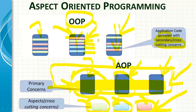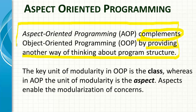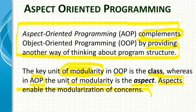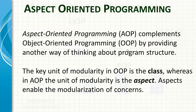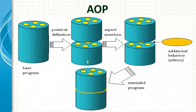AOP is not something which replaces OOP — it complements OOP by providing another way of thinking about program structure beyond just classes, objects, properties, behaviors, and methods. The key unit of modularity in OOP is the class, whereas in AOP the unit of modularity is the aspect. The aspect enables modularization of concerns. You will be doing OOP and on top of that you will be adding AOP as well, which will make your code cleaner.